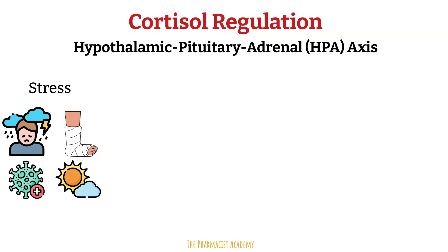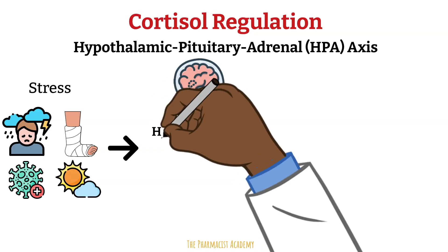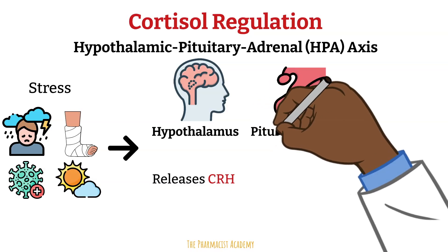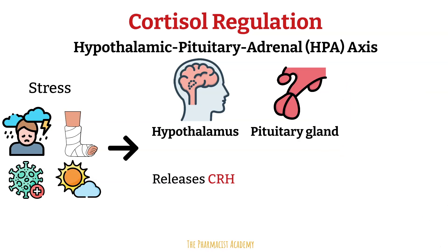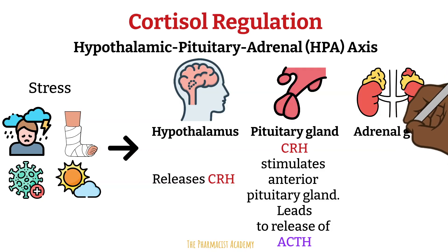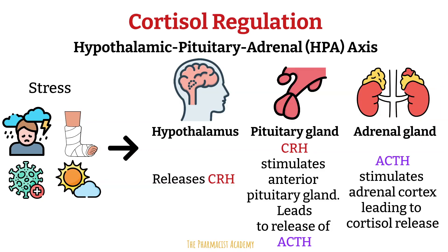Cortisol levels peak in the morning to prepare the body to wake up and be active. Once stress is detected, the hypothalamus releases corticotropin-releasing hormone, CRH. CRH travels to the anterior pituitary gland, promoting it to release adrenocorticotropic hormone, ACTH. ACTH then stimulates the adrenal cortex to produce and release cortisol into the bloodstream.